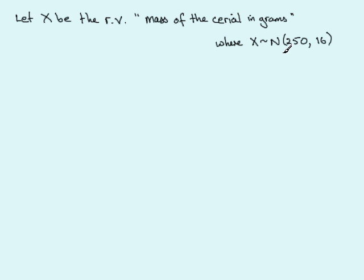Okay, so we have X is the random variable mass of the cereal in grams, where X follows a normal distribution with a mean of 250 grams and a variance of 16 grams squared. Now the next thing is to draw a sketch. So we'll put up the normal distribution here and we'll write